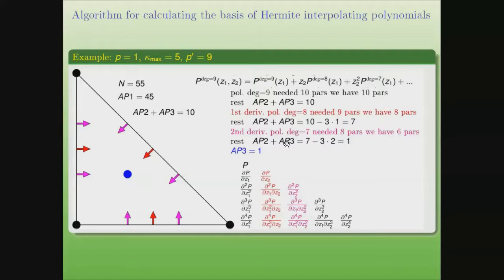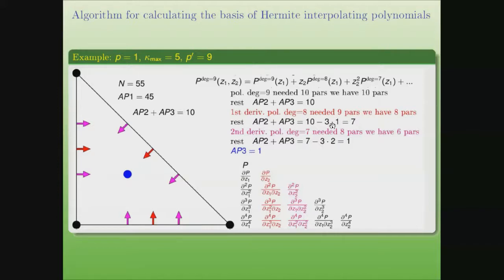For the third derivative: a polynomial of degree 6 needs 7 parameters, but we have 4. There are not enough parameters — nine conditions to describe the auxiliary polynomials of the first type. So we have 55 conditions total: 45 describe auxiliary polynomials of the first type, nine conditions describe auxiliary polynomials of the second type, and one condition describes auxiliary polynomials of the third type.